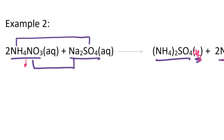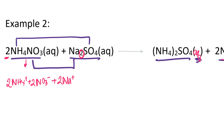Since ammonium nitrate is an aqueous solution, I get ammonium ions — but notice the coefficient of two, so I get two moles of ammonium ion and two moles of nitrate ions. Moving to the next reactant, sodium sulfate gives me sodium ions; because of the subscript two, that means two moles of sodium ions. The other half of sodium sulfate gives me sulfate ions, which have a negative two charge. That takes care of everything on the reactant side.